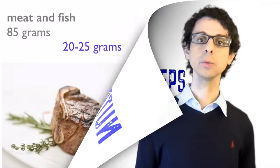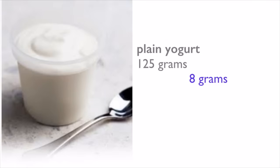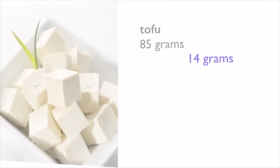There are 21 to 25 grams of proteins in a three ounce serving of meat, poultry, or fish. There are 16 grams of protein in two eggs. There are 11 grams of protein in a six ounces container of plain yogurt.